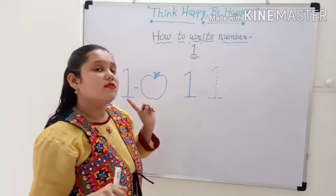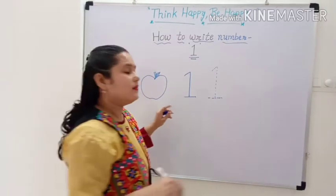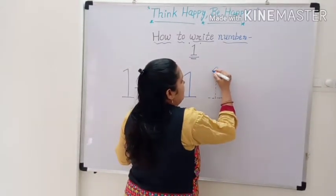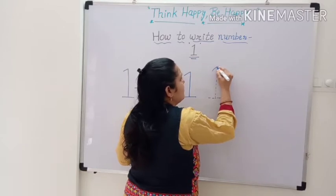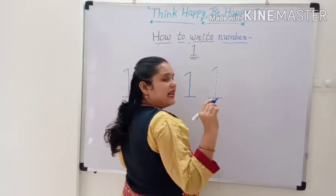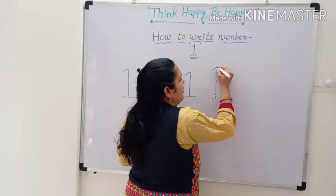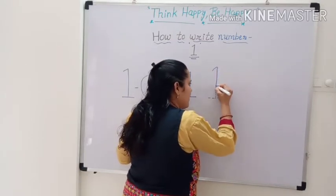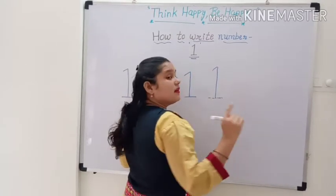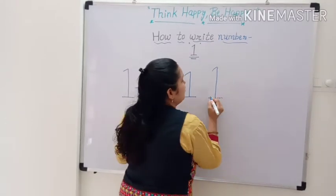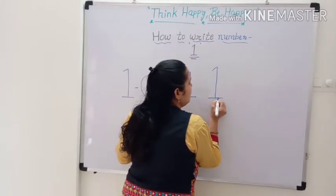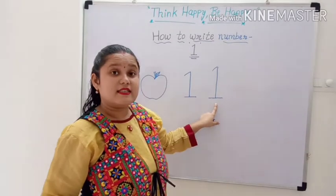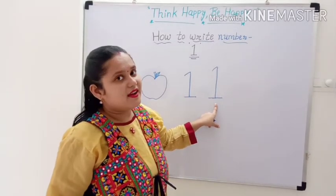Now repeat again. First, we make a small slanting line. Then draw a standing line. After that, draw a sleeping line. This is number one.